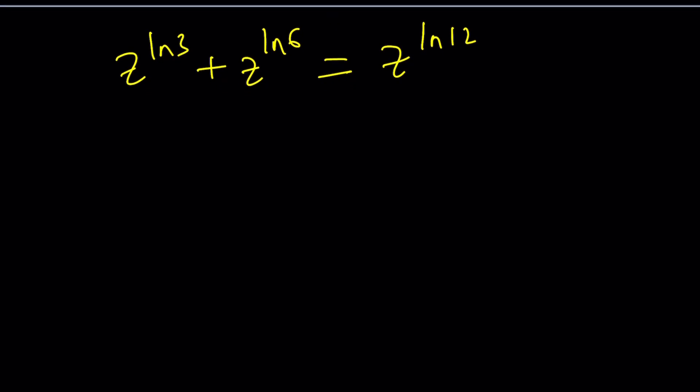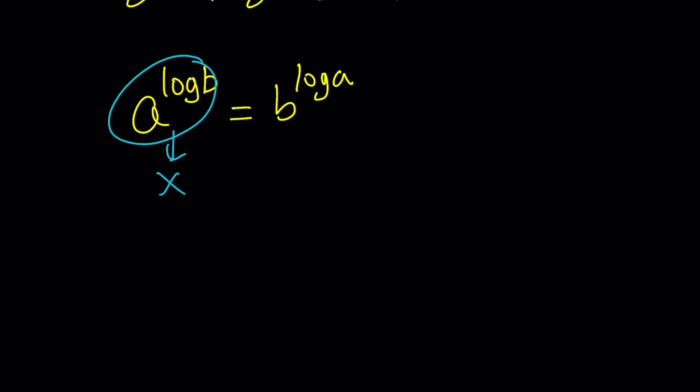To be able to solve this problem, we're going to be using a very important property of logarithms and this is how it goes. Whenever you have something like A to the power log B, you can write this as B to the power log A. Now you might be wondering why does this property work. Let's go ahead and take a look. If one of these is equal to X, let's say A to the power log B is equal to X. And by the way, I use base 10 here, but you can use pretty much any base. And whatever base you use, use that base to log both sides.